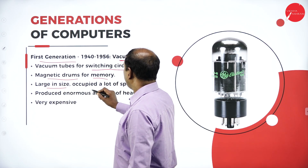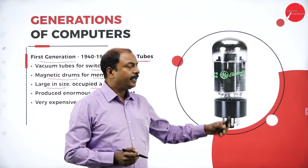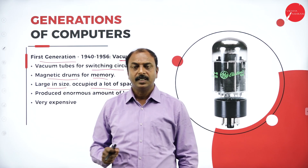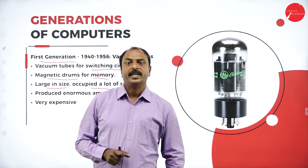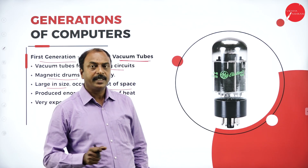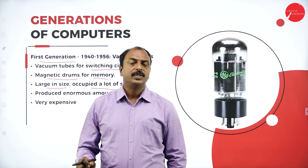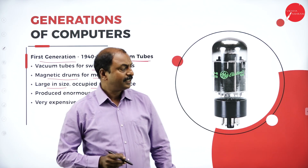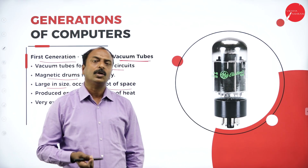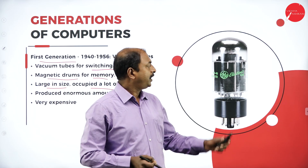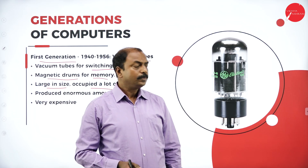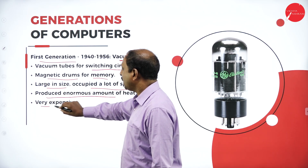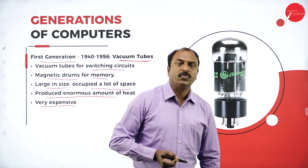These computers were very large in size and occupied a lot of space — they used to occupy a room space. In that computer, they were using thousands of electric valves as the main electronic component, and there were very lengthy electrical circuits. Because of that, the size was very large. These electric valves used to generate a lot of heat; imagine thousands of valves in one computer producing enormous amounts of heat. And this computer was very expensive. So these are the characteristics of first generation computers — the main electronic component was vacuum tubes or electrical valves.